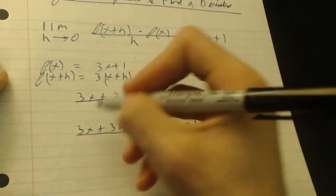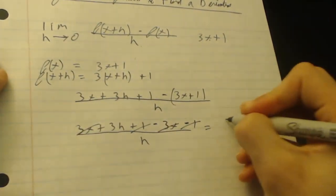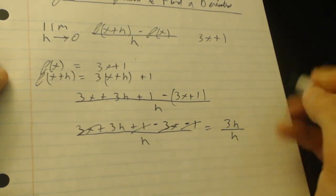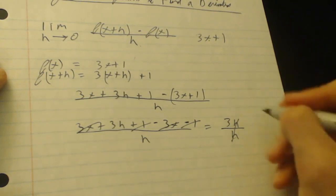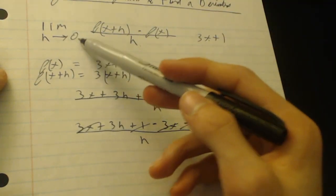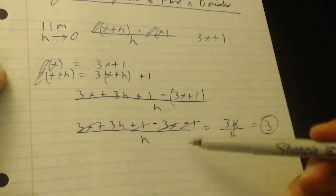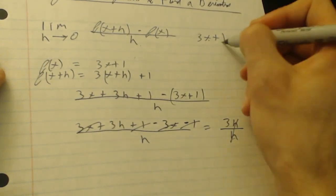That looks like the 3x's cancel. The 1's cancel. So we're left with 3h all over h. Now the h's as well cancel, so we're left with 3 as our answer. So we don't actually have to plug in the 0 to the h's at any time, because all the h's cancel and we're just left with 3 as the derivative of 3x plus 1.